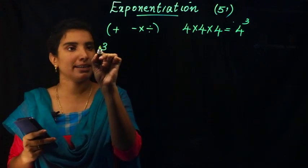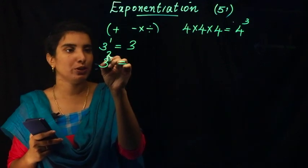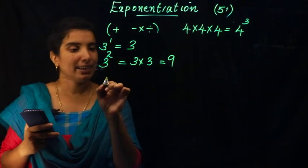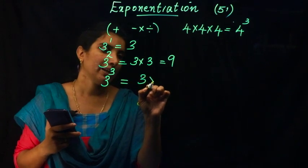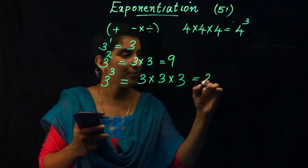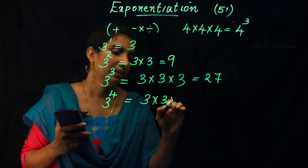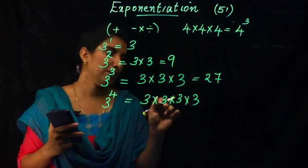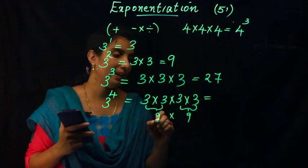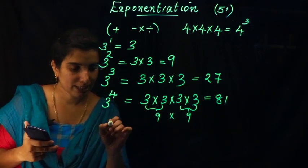For example: 3 raised to 1 is 3. 3 raised to 2, also called 3 squared, equals 3 × 3 = 9. 3 raised to 3, also called 3 cubed, equals 3 × 3 × 3 = 27. 3 raised to 4 equals 3 × 3 × 3 × 3 = 81. Now we can find the value of 3 raised to 6.